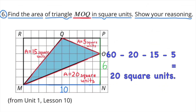The area of the rectangle is 60. Take away 20 square units, take away 15 square units, and take away 5 square units. What you're left with is the area of triangle MOQ: 20 square units.